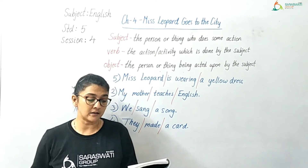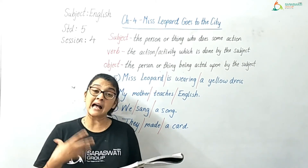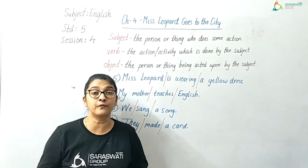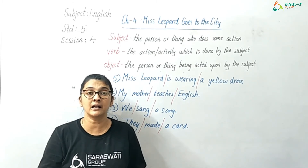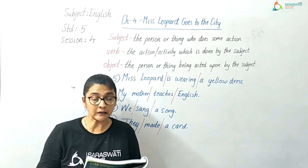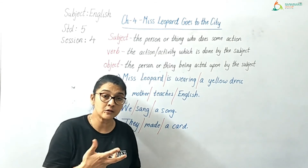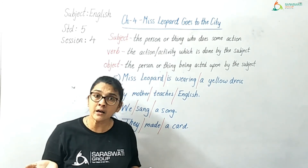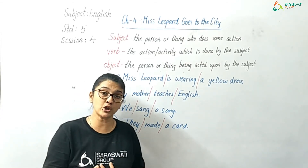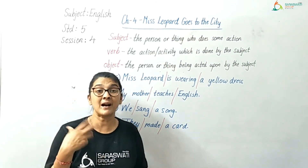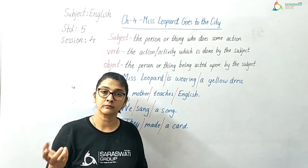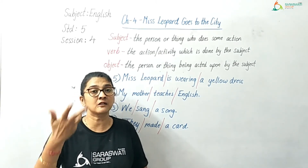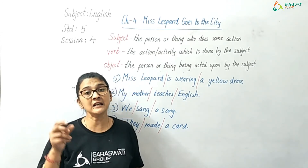Then comes the interrogative sentence. An interrogative sentence asks a question. It always ends with a question mark. For example: 'Who is that?' — we are asking a question, so that is an interrogative sentence with a question mark. 'Isn't that a leopard?' — again a question mark. 'Where is your book?' — question mark. 'When did you go home?' — question mark. When we ask a question, that question is known as an interrogative sentence, and it ends with a question mark.